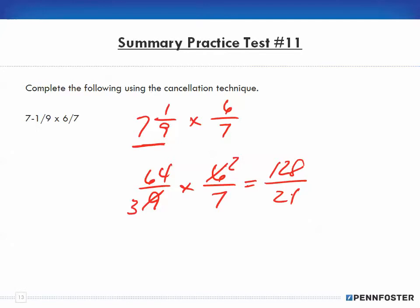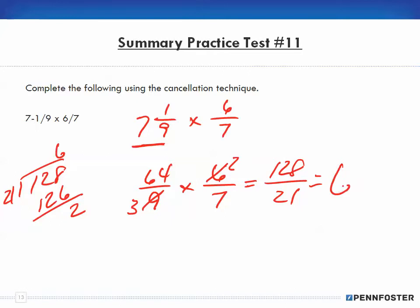Since 128 over 21 is an improper fraction, I convert it to a mixed number: 21 goes into 128 six times (that's 126), with a remainder of 2. So the answer is 6 and 2 over 21. That one was relatively simple — it's a matter of knowing the concepts and applying them, like a toolset. When you're building a treehouse, you need to know when to use a saw, a hammer, or a screwdriver. Math is about having the tools, understanding the concepts, and applying them when needed.